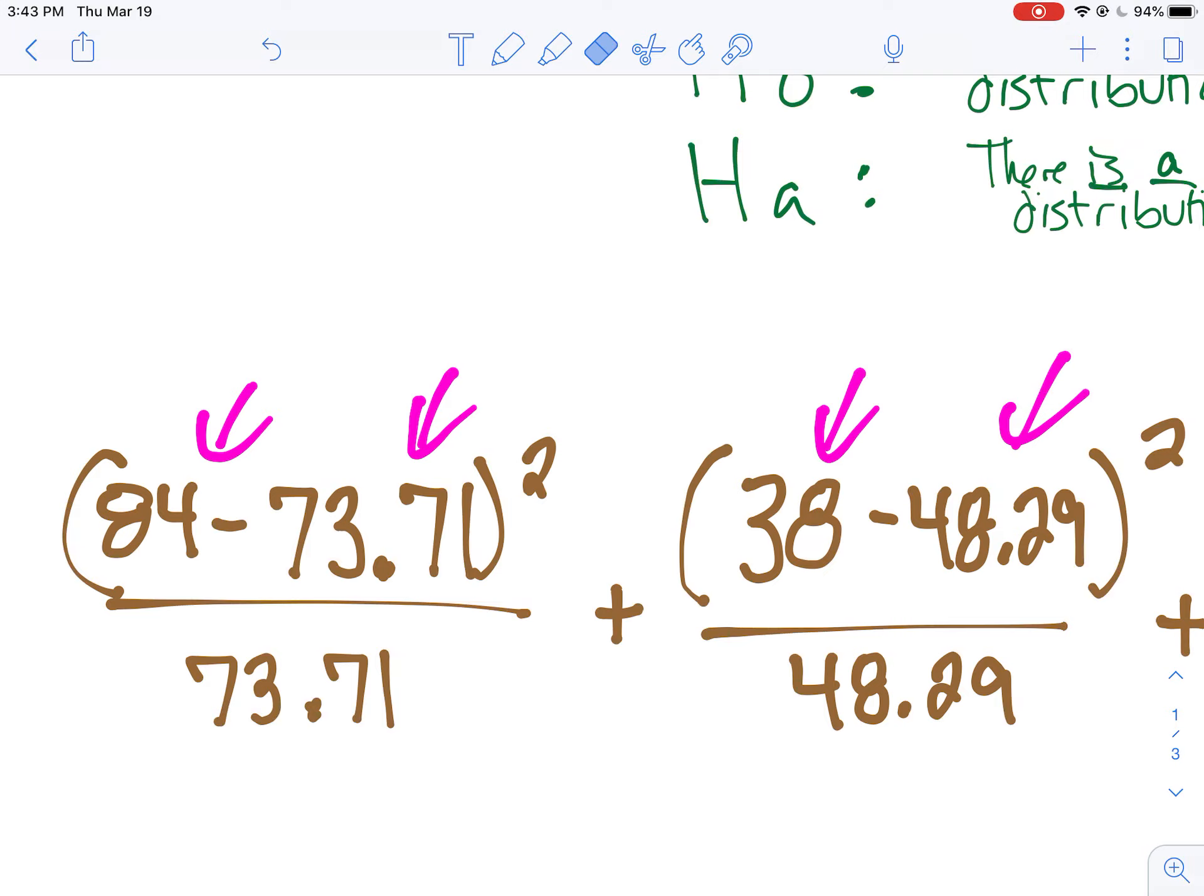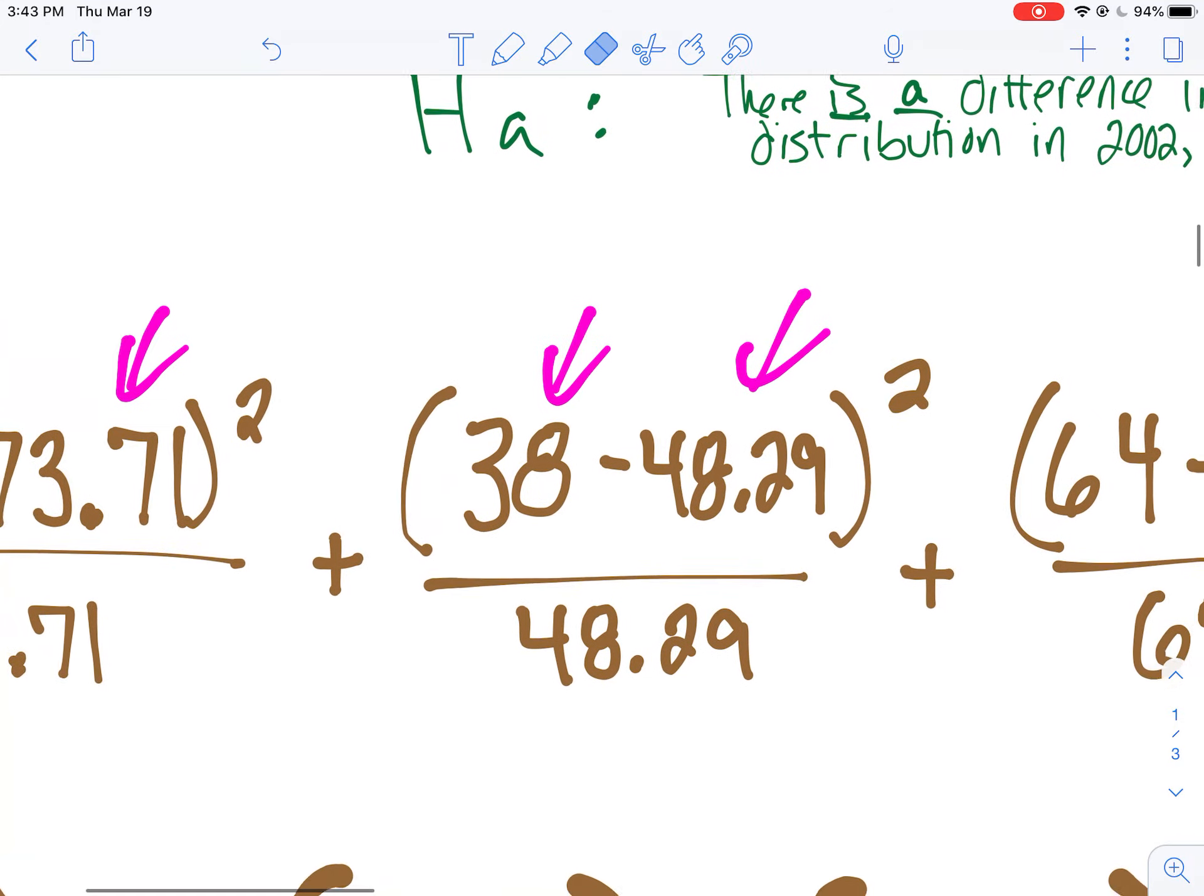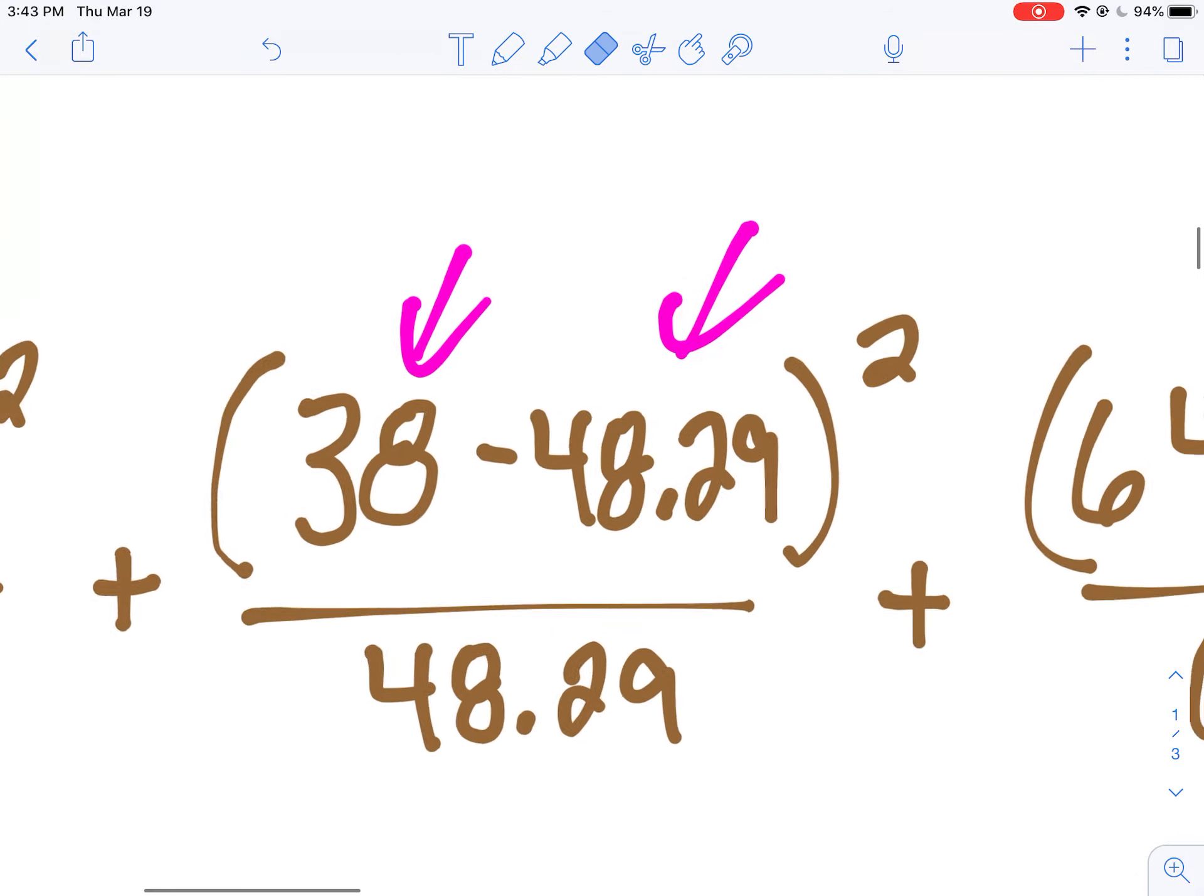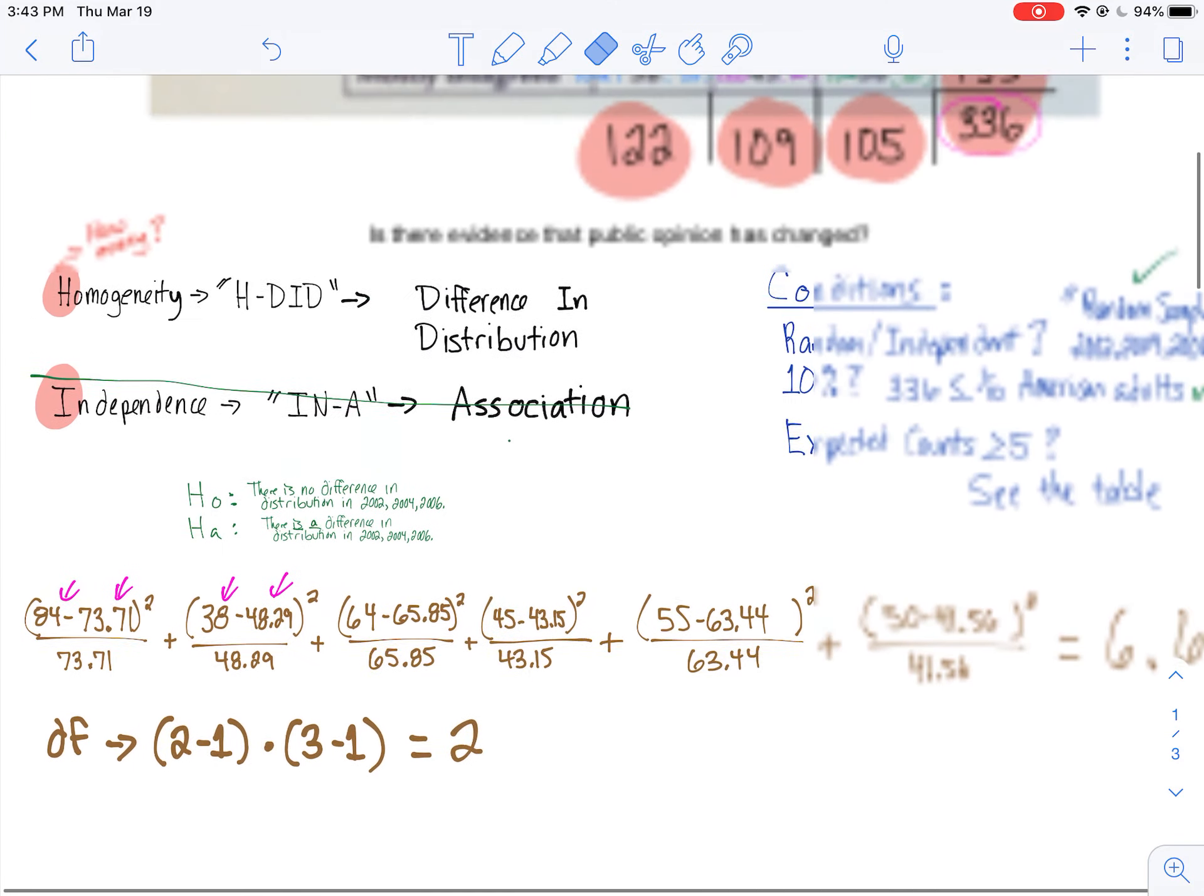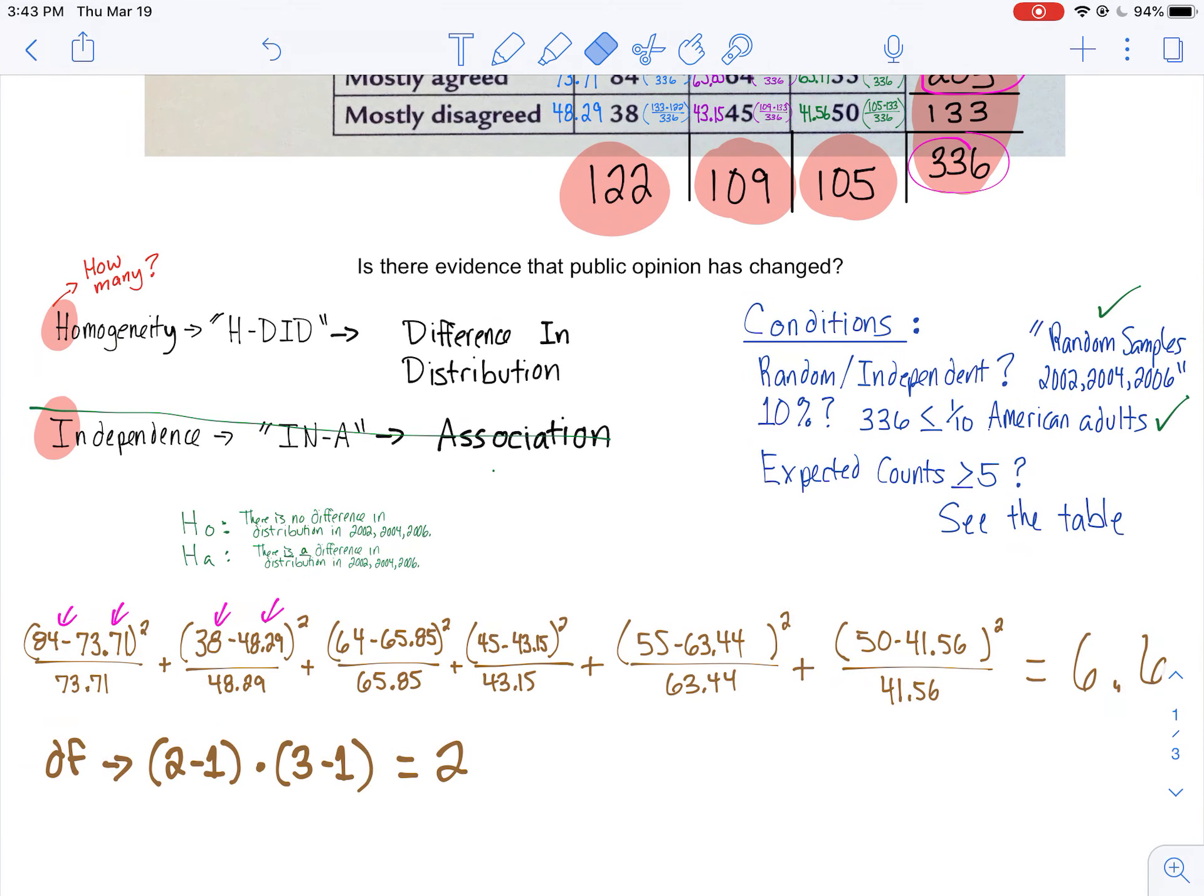Even when you're doing like z-scores and standard deviation, you always go observed minus expected over what you expected. So it's a pretty standard formula you use each time. So I did that each time here. Observed minus expected, squared, divided by expected. Did that for all of these. It's a lot of work, as you can see.